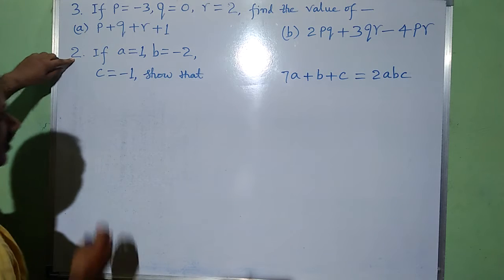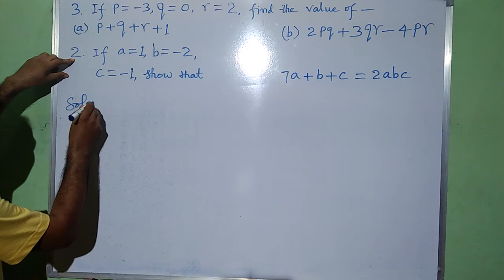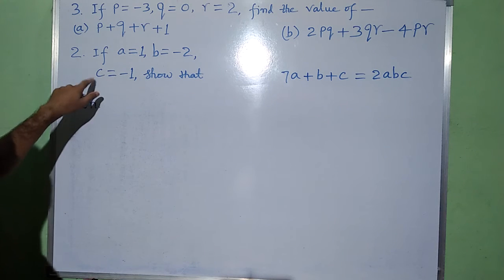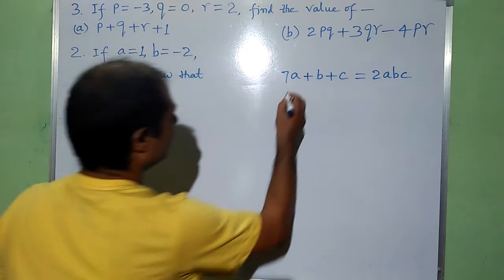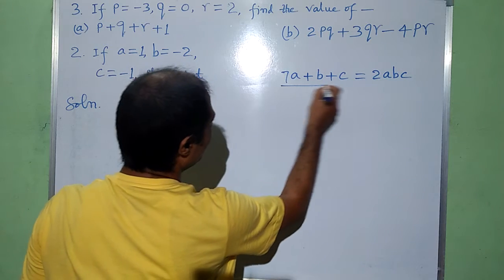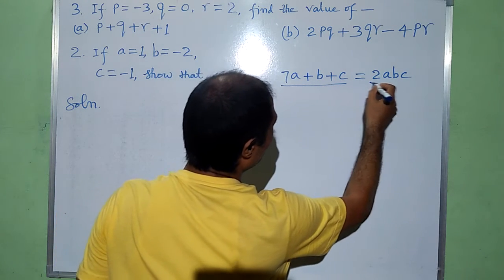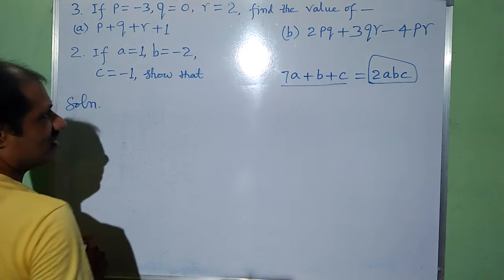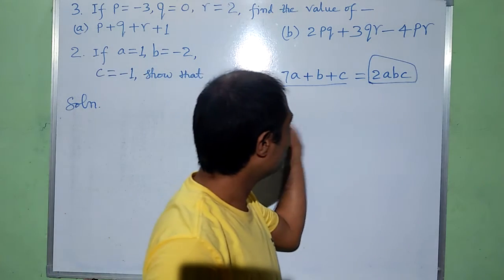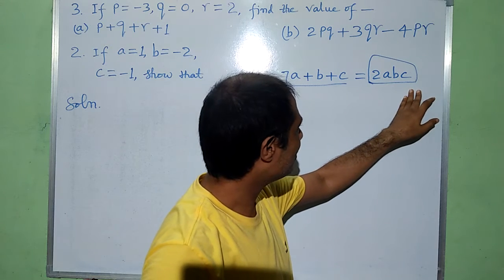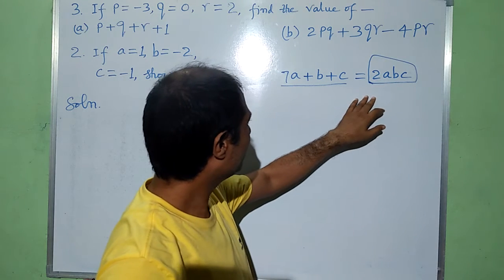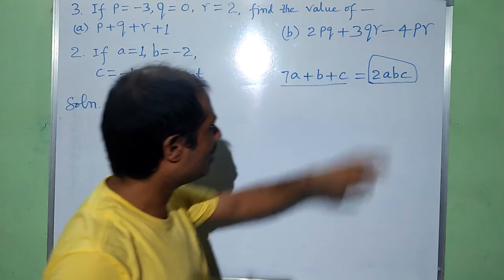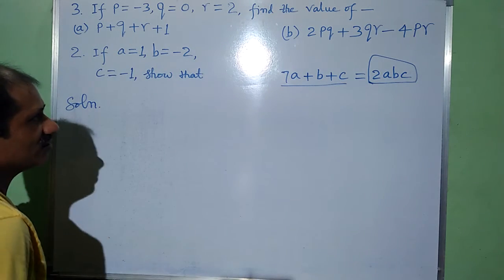Now the second problem. Its solution will run like this. If a is equal to 1, b is equal to minus 2, c is equal to minus 1. So we need to evaluate 7a plus b plus c, and check if it is equal to 2abc. This is the LHS, the left hand side of this algebraic expression, and this is the right hand side. We have to find the value of both parts.